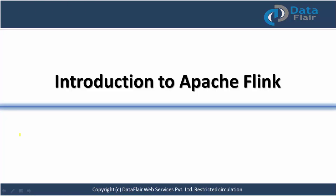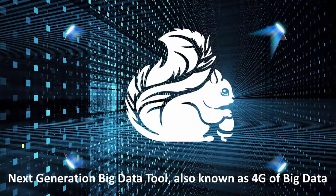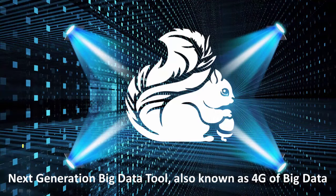Let's start our discussion with the agenda. We'll start with the introduction to Apache Flink, then talk about its history, discuss its ecosystem in great detail, see its basic architecture, transformations, execution model, and end-to-end complete execution flow. We'll also discuss several features of Apache Flink. In one liner, Apache Flink is the next generation big data tool.